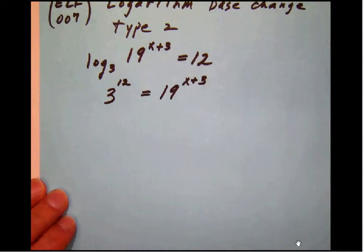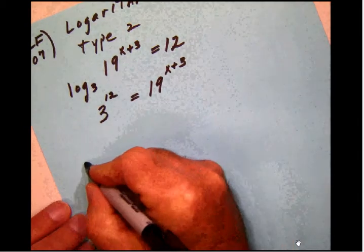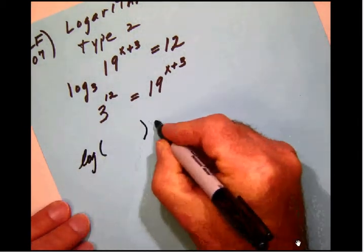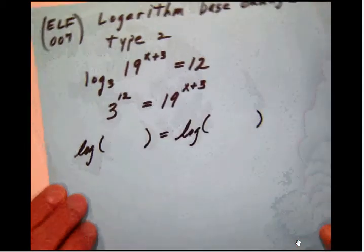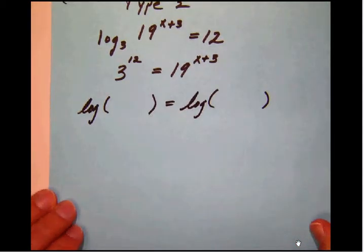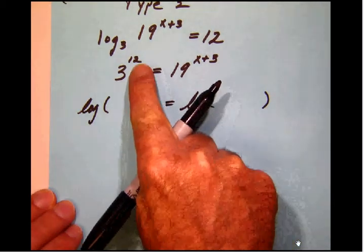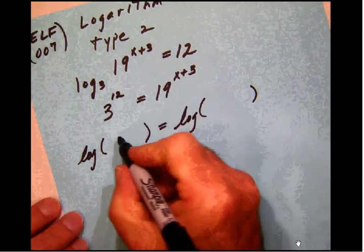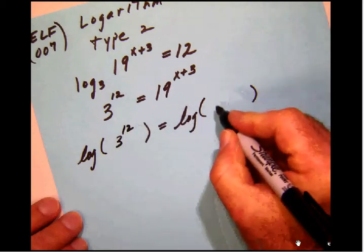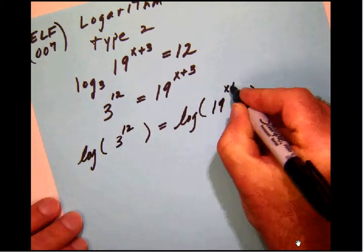If we take the logarithm to the base 10 of both sides, as we've done before, we're going to, of course, in a later step, be able to bring these powers down in front. So once again, the next move here is to take the log of both sides. So we'll have log of 3 to the 12th equals log of 19 to the x plus 3.